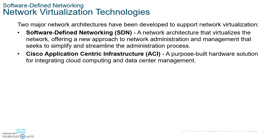Now we get into network virtualization technology — two major network architectures that have been developed to access the cloud. First is Software Defined Networking (SDN), a network architecture that virtualizes the network, offering new approaches to network administration and management that seek simplicity and streamline the administration process. You can control switches, routers, and servers through software without seeing the actual hardware. The other is Cisco Application Centric Infrastructure (ACI), which is essentially a purpose-built hardware solution for integrating cloud computing and data center management.